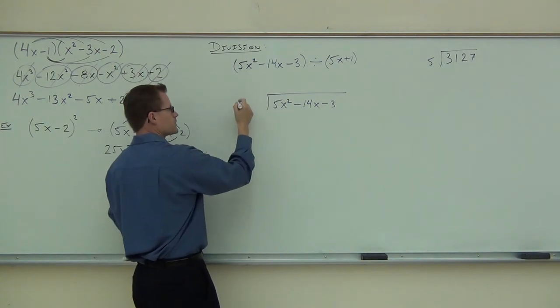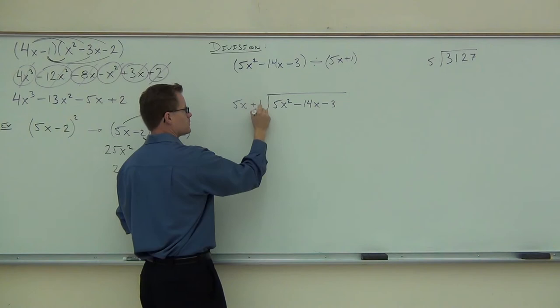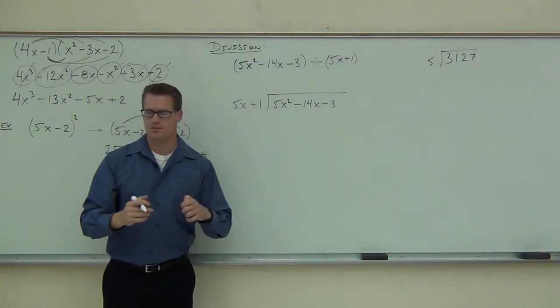What do you suppose is going to go on the inside of our division symbol? And on the outside, we're going to have the second polynomial, what we're dividing by. Yeah, that's our divisor. So we have that up front.